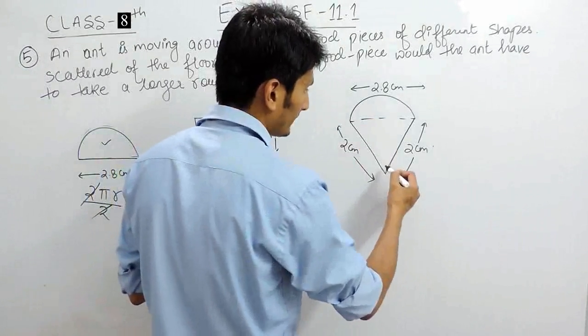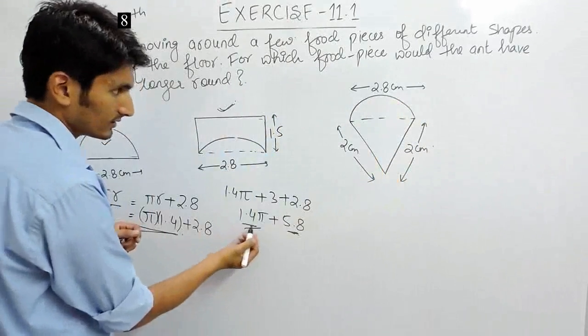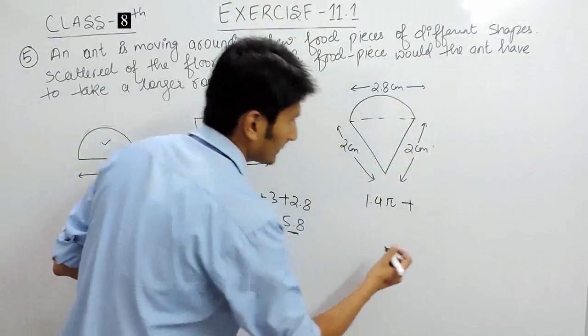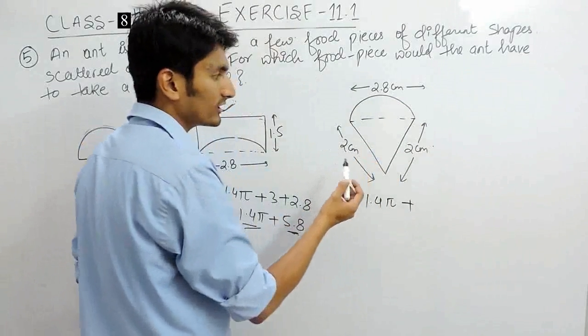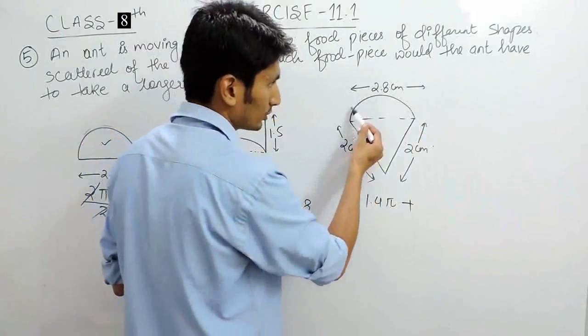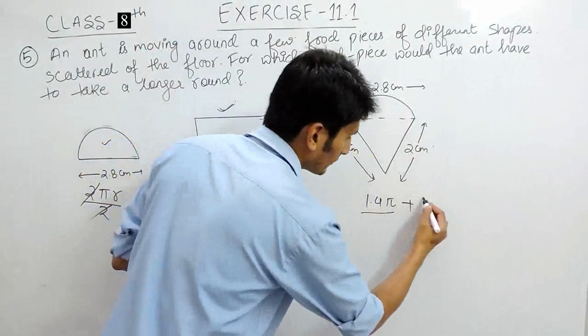we know that if you want to find this, this is same as this which is 1.4π plus the perimeter for this figure is this plus this plus this, so this is same as 1.4π and this plus this is 4.